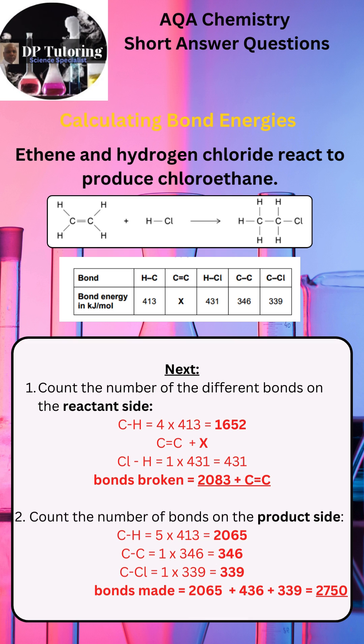The next thing to do is to multiply the total bond count for each bond type with the bond energies for the reactant and product, highlighted on the screen. The total energy to break the bonds is 2083 plus the carbon-carbon double bond value. The total energy to make the new bonds is 2750 kilojoules per mole.